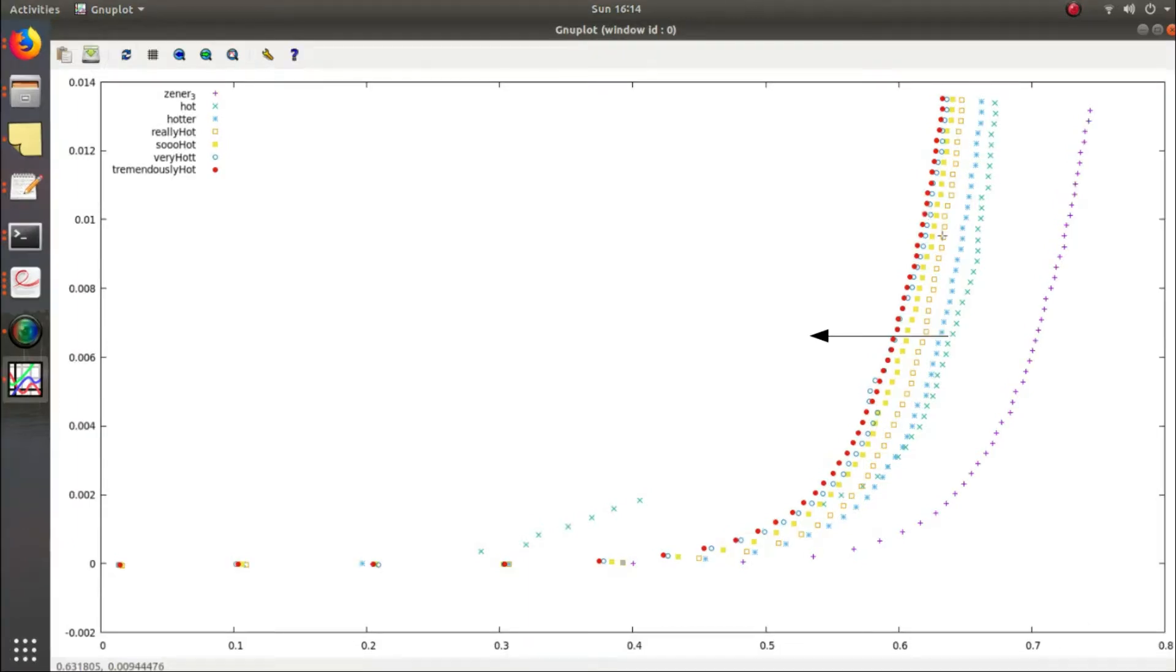And that is that the diode turn on voltage is decreasing with increasing temperature. You can see that curve is shifting to the left for higher and higher temperature. And the reason, the underlying reason, is that the charge carrier concentration in the diode is not just a function of the doping level, but also it's dependent on temperature. And as the temperature increases, more charge carriers are available, and thus more current can flow for higher and higher temperatures.